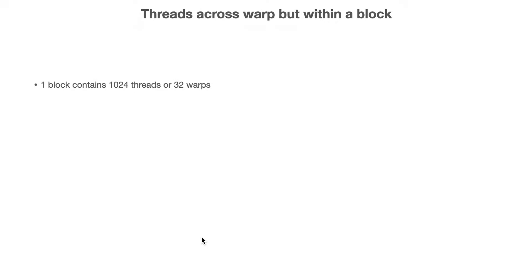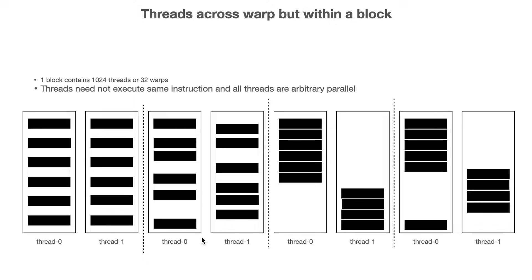Now moving towards threads across warp but within a block: a block contains 32 warps, or 1024 threads, since each warp contains 32 threads. As mentioned, threads need not execute the same instruction — threads can be arbitrarily parallel. So the black strip for one thread may be a completely different instruction from another thread's black strip, as long as both threads are from different warps.